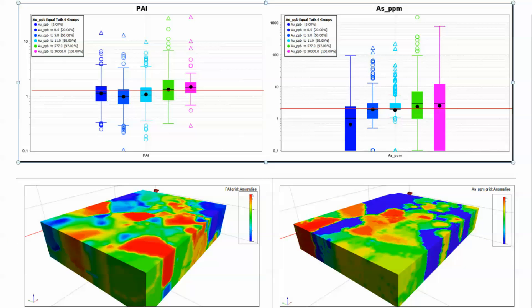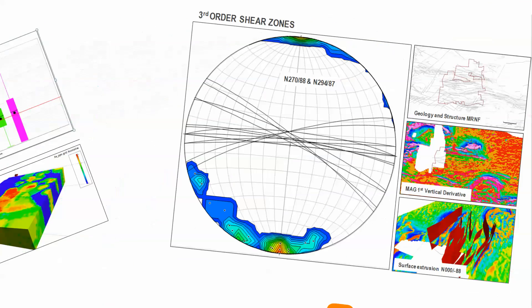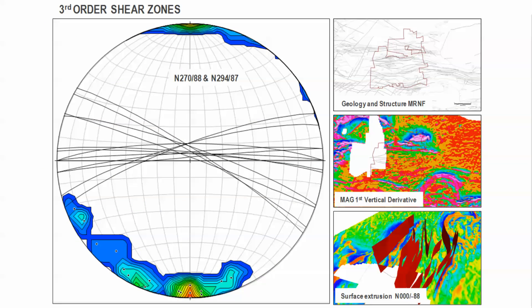JP established a relationship between the gold grade and major element chemistry, as well as background arsenic values. Three separate orders of shear zones were identified and modeled in 3D. The gold deposits can be associated with second and third order shears, so the distance to each structure was incorporated into each block.